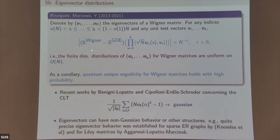If you have this result you also know that quantum unique ergodicity (QUE) holds with high probability. Recent work by Benigni, Benigni-Lopatto and others proved a central limit theorem over QE. These results are independent: ours talks about many eigenvectors and their joint distribution but doesn't look at whether they have cancellations in their average; the CLT results look at one eigenvector in l^2 norm.